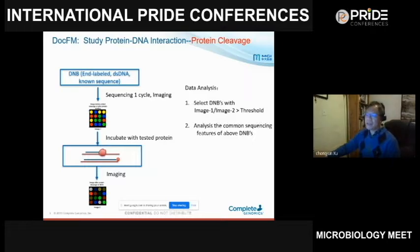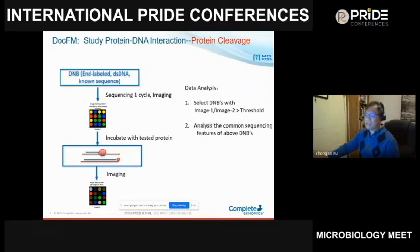Now that we have native sequences, we do one more imaging cycle, then incubate with our test protein — for example, restriction enzymes — and image again. If a DNB contains the restriction enzyme recognition site, it will be cleaved and show no signal. Those without the recognition site will show unchanged signal. By comparing image one to image two intensities using this stretch code, we can analyze isolated DNBs and identify sequence features.